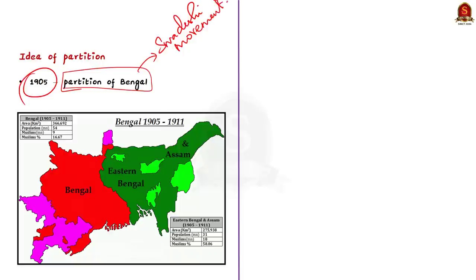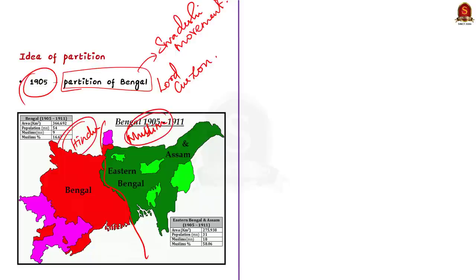In 1905, the Partition of Bengal took place under Lord Curzon's regime, dividing the province between West Bengal, whose majority was Hindu, and East Bengal, whose majority was Muslim. This instigated Muslim leaders to promote the idea of a separate Muslim state more vigorously, as they developed fear of Hindu dominance. Many protest movements and communal riots continued in Bengal. The British aim to dissolve nationalism among Indians succeeded.